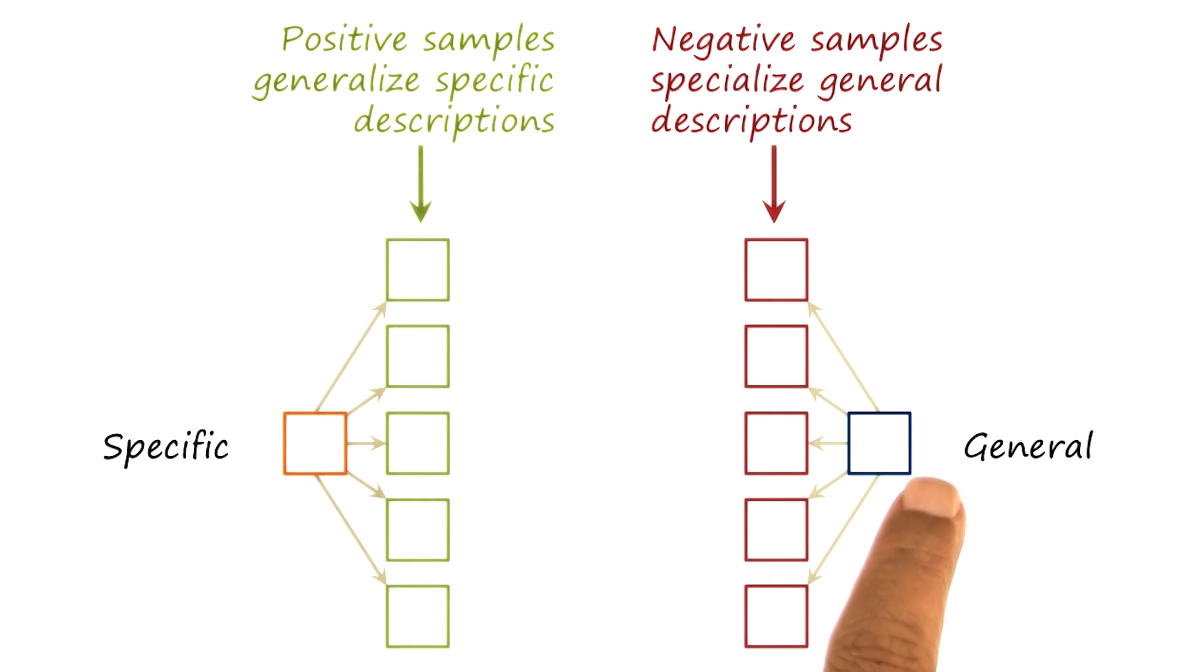Similarly, here is the current general model. And as the negative examples come, we're going to specialize the general model. And here are some of the specializations.